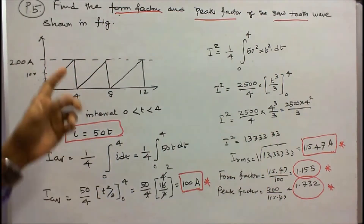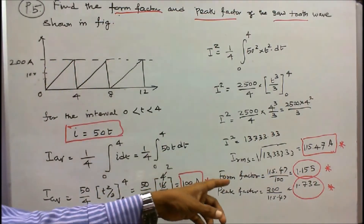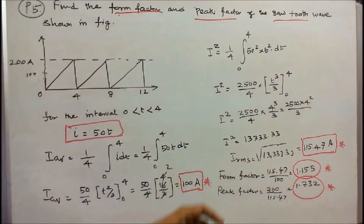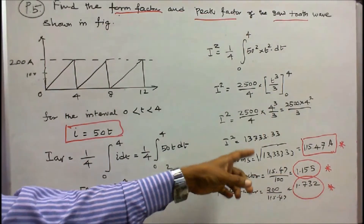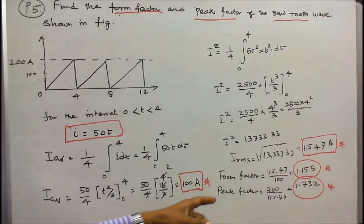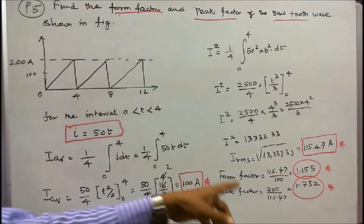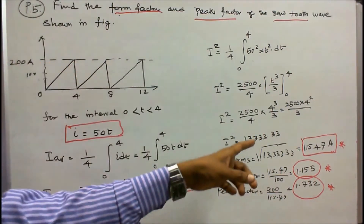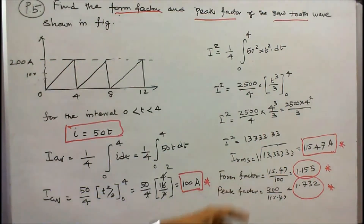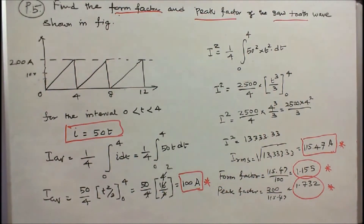Form factor = RMS / average = 115.47 / 100 = 1.155. Peak factor = maximum / RMS = 200 / 115.47 = 1.732. With this I conclude my lecture. Thanks for listening.